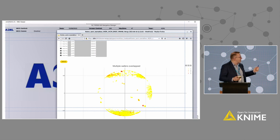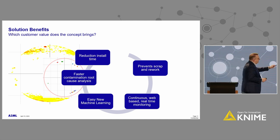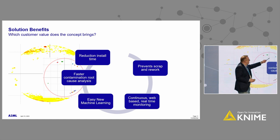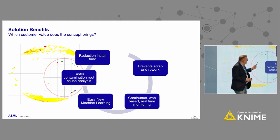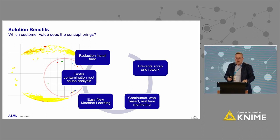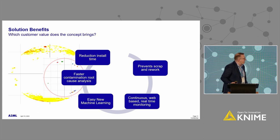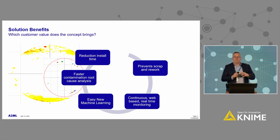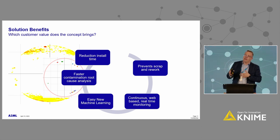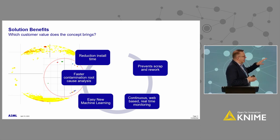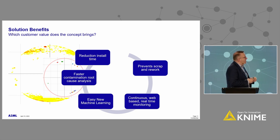We used the KNIME web portal for the prototype. The other use case is using an algorithm called DBSCAN that automatically clusters the contaminations and helps us identify the root cause of the contamination source, which also saves a lot of time. This is important to keep in mind: we are in a fab running production full time, 24 hours per day. Any delay has a lot of reliability and availability impact, so it's important to go very fast to the root cause.